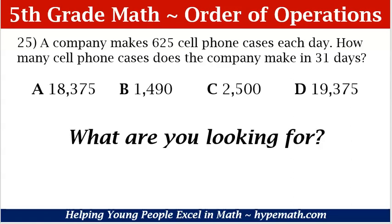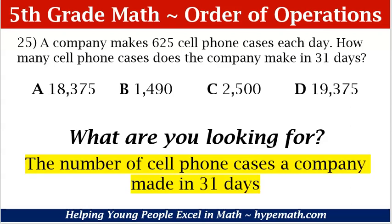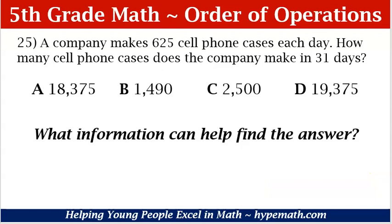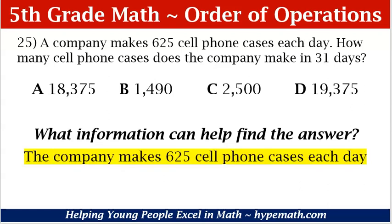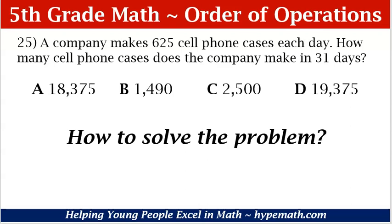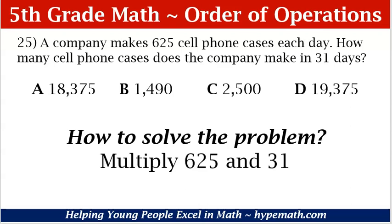What's our most important question — what are we looking for? We are looking for the number of cell phone cases a company made in 31 days. What information can help us find the answer? The information that can help us is that a company makes 625 cell phone cases each day. How are we going to solve the problem? In order to solve this problem, we need to multiply 625 and 31. Let's dive in.